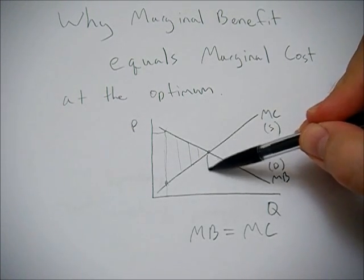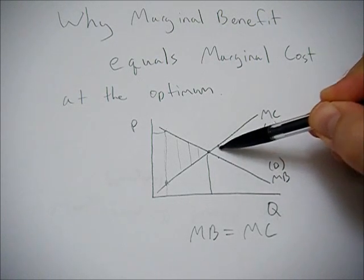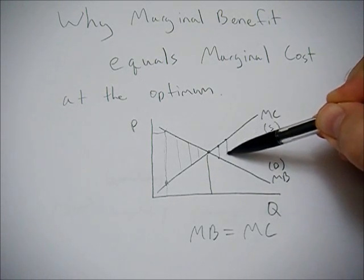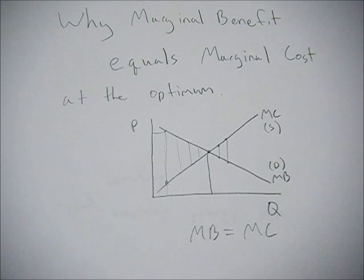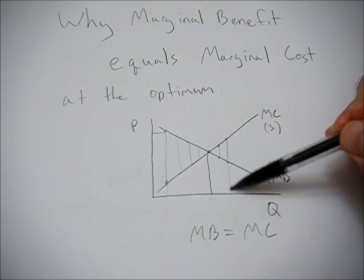If you go past this point, your marginal cost is now greater than your marginal benefit. So you're getting a negative surplus or a net loss in deciding to consume that amount.